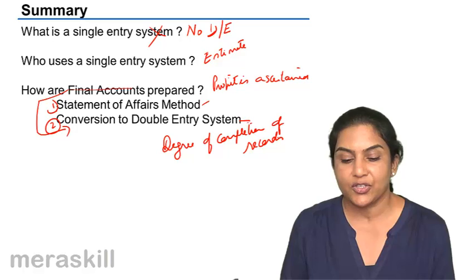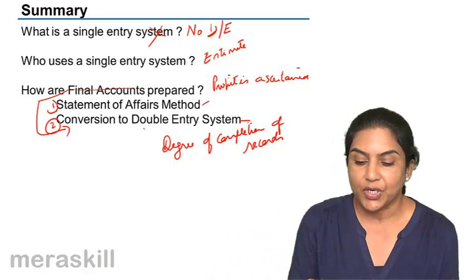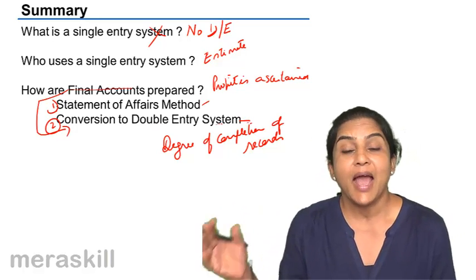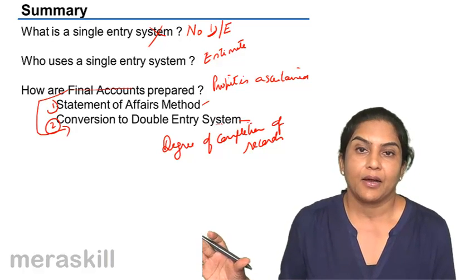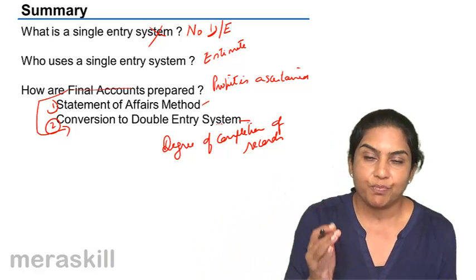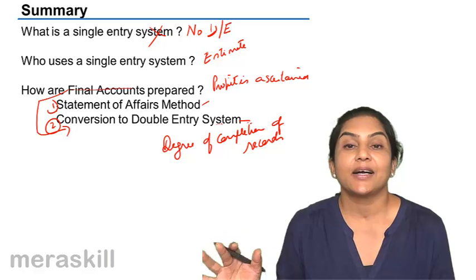So if the more detailed records are maintained, we may be able to convert it to a double entry system and prepare a complete income statement with a gross profit and net profit and a balance sheet.